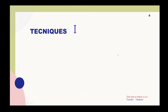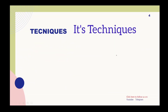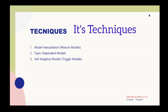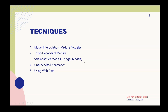Now let's look at the techniques used for language model adaptation. The first technique is model interpolation, the second is topic-dependent models, the third is self-adaptive models, the fourth is unsupervised adaptation, and the fifth is using web data. There are other techniques as well, but these are the main ones.